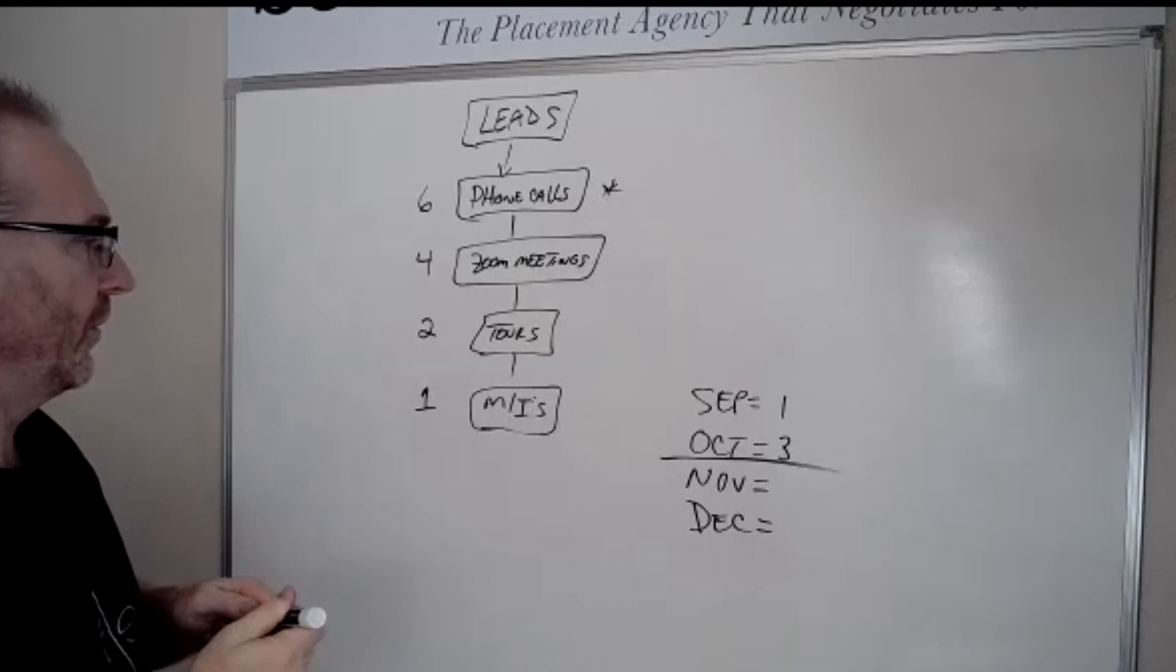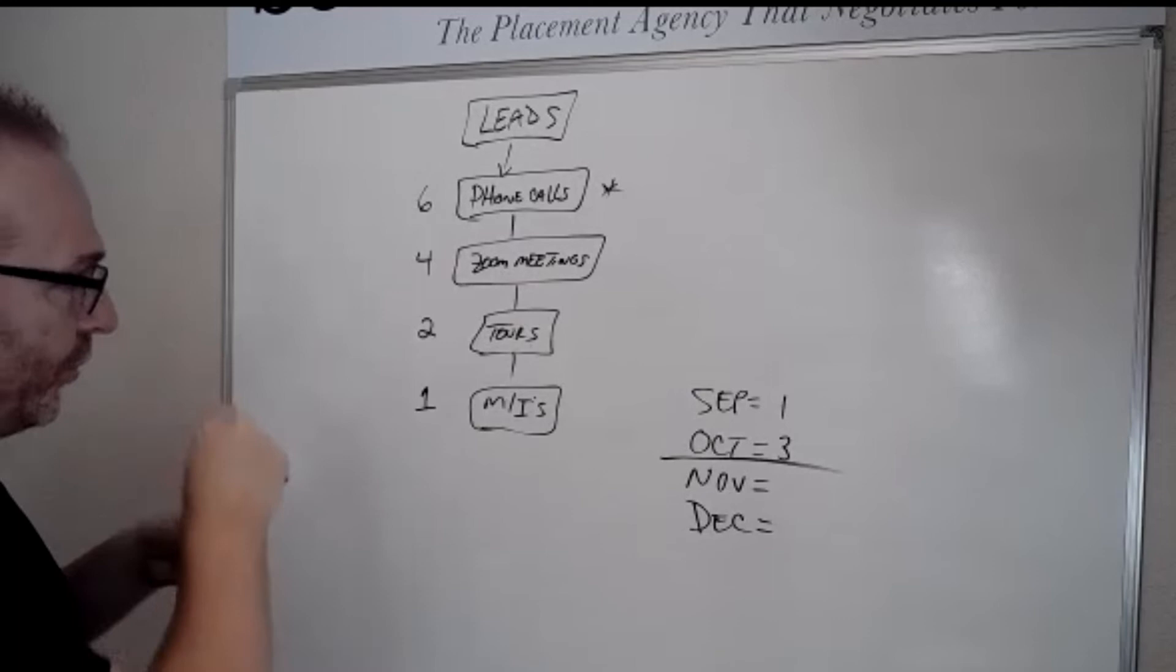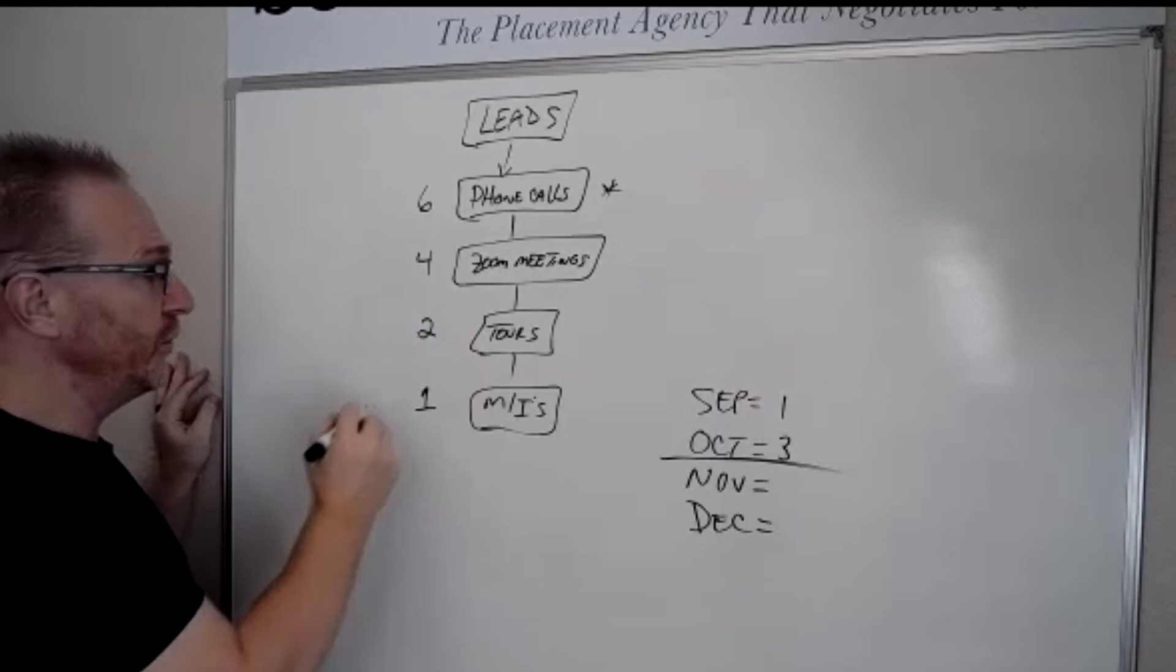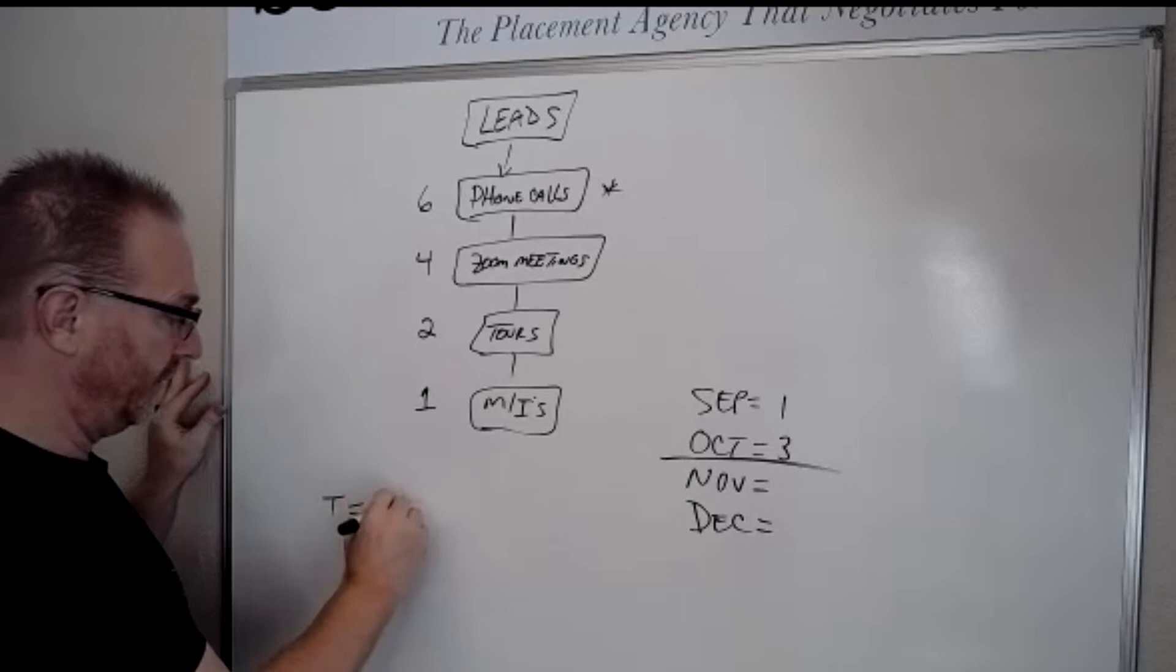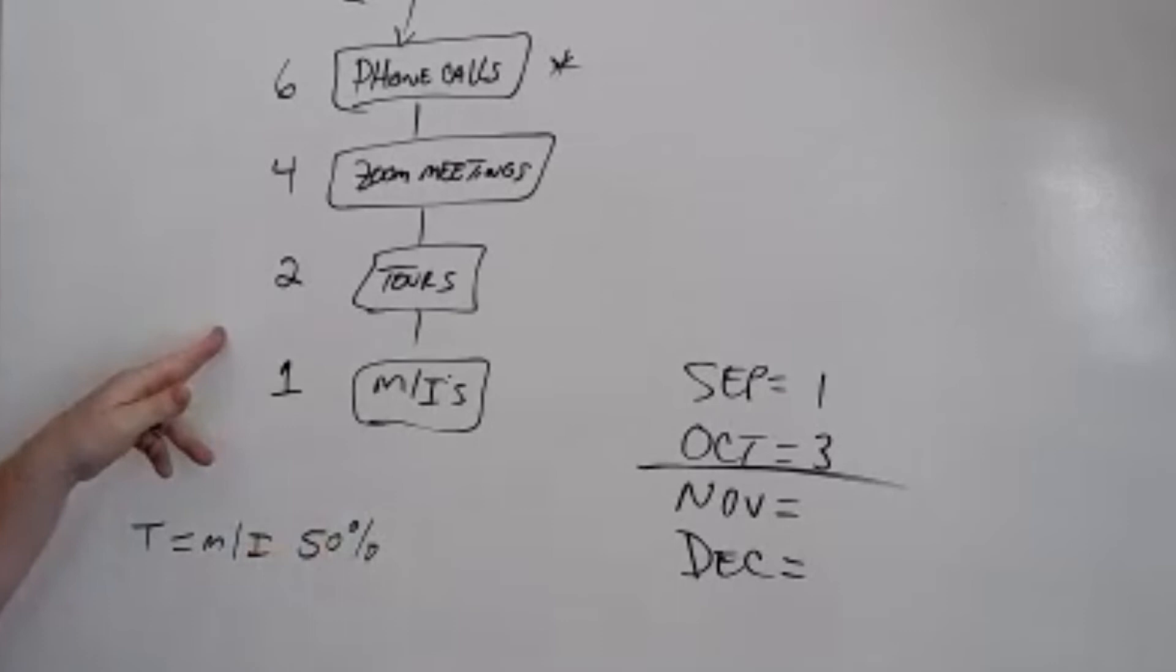So we can look at the math here. If you are looking to get a move-in and you know you can get two tours, you've got a 50% chance to go from a tour to a move-in. All you need to do is get two tours. If you want a move-in, all you need to do from a Zoom meeting to a move-in is 25%. You need four Zoom meetings.